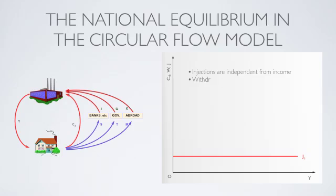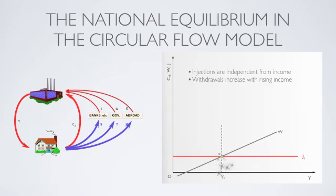On the contrary, withdrawals will increase with increasing income. The more you earn, the more you will save, pay taxes, and import. That is why the withdrawals line is upward sloping. And equilibrium is where withdrawals equal injections.